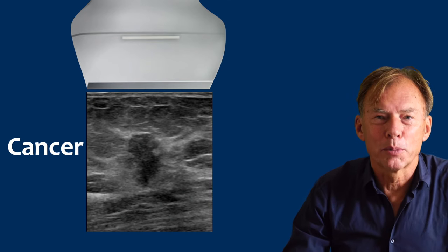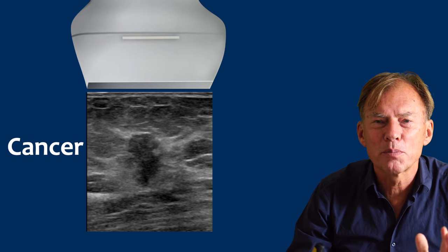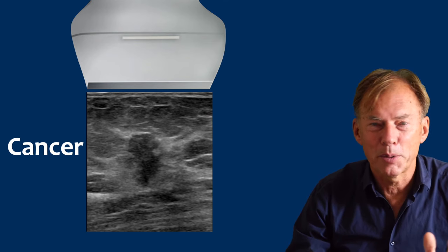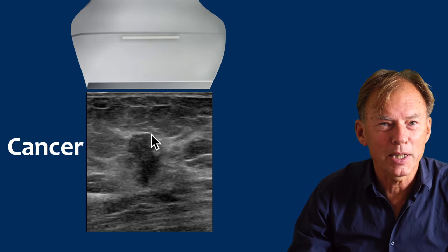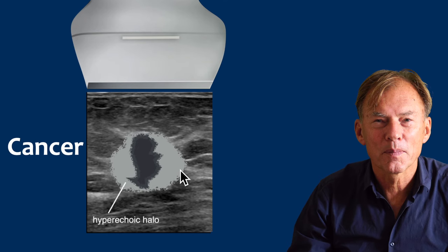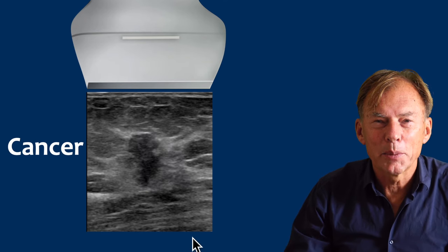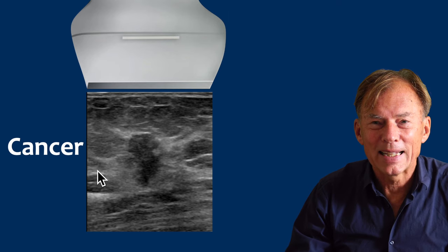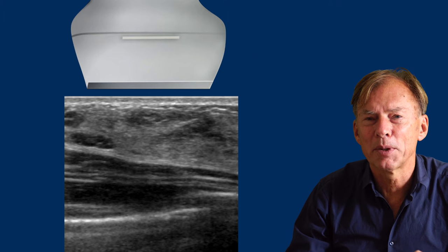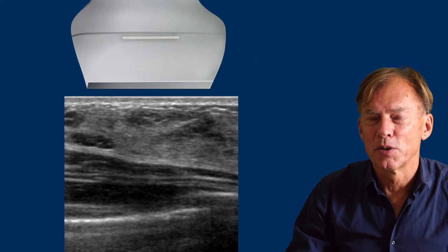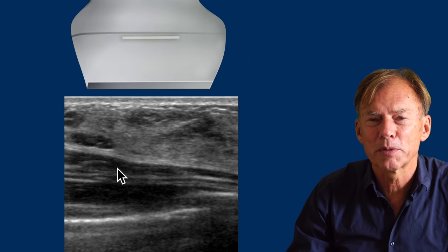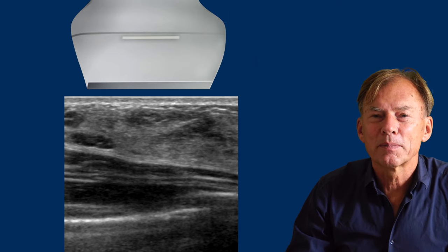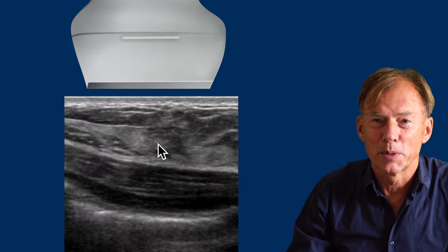Here is an example of a typical breast cancer — diagnosis made in a split second. It is hypoechoic, irregular, with an indistinct border, and notice the hyperechoic halo. Here we have normal tissue, and then it stops — this is all cancer. Here is another example where on this image everything is normal: the skin, mostly glandular tissue, pectoral muscle, ribs and lung — but here is a small breast cancer.